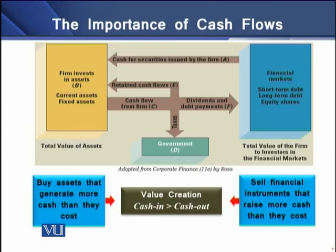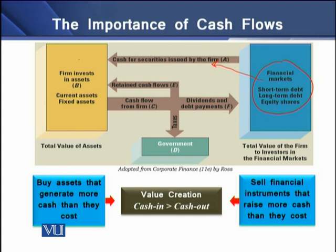On the screen you can see the mechanics of how a firm generates cash inflows and cash outflows. At the first step, when a firm requires cash it looks to financial markets and issues certain securities — these may be debt securities for short-term and long-term, and equity securities in terms of equity shares. From these markets the firm gets a certain amount of cash and invests it into its assets, both current and fixed.